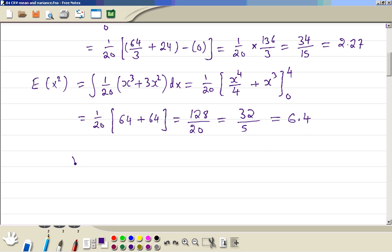Now we work out the variance. So the expected value of x squared minus the mean squared. So this is 6.4. Then we use the exact value of the mean, so it's 34 divided by 15 squared. And then you use your calculator. From the calculator we get the answer in decimals, 1.26.